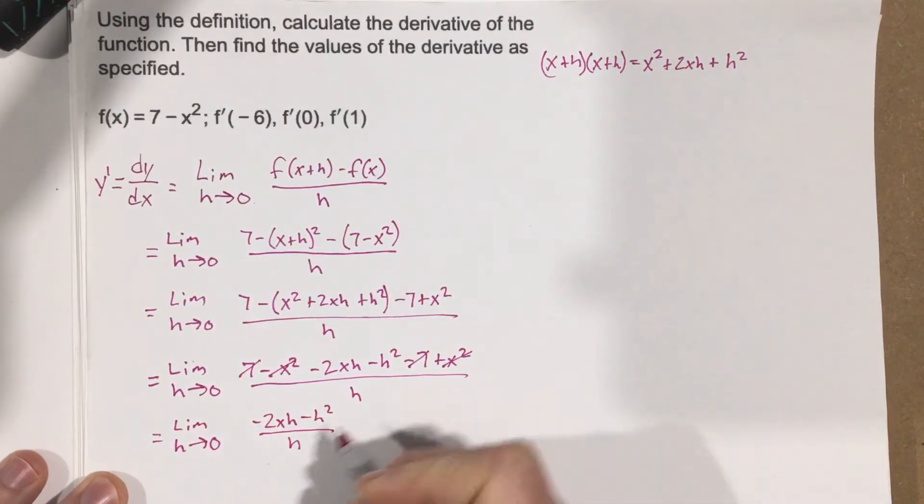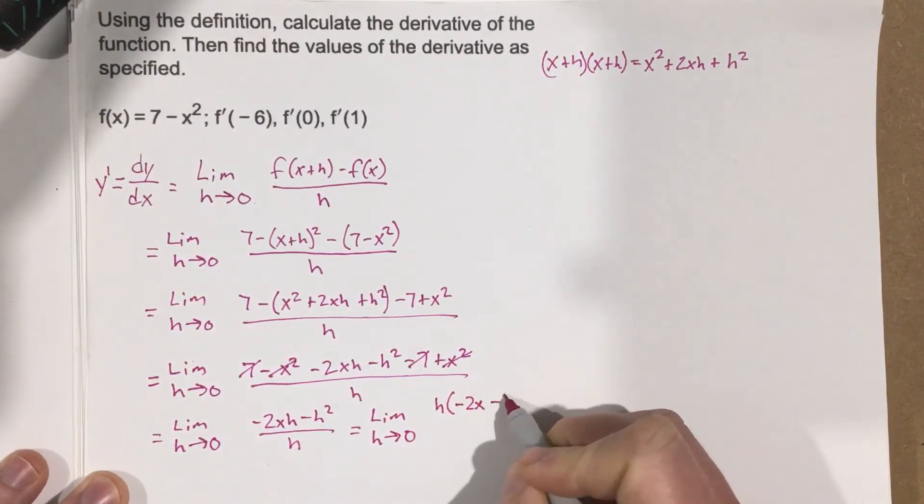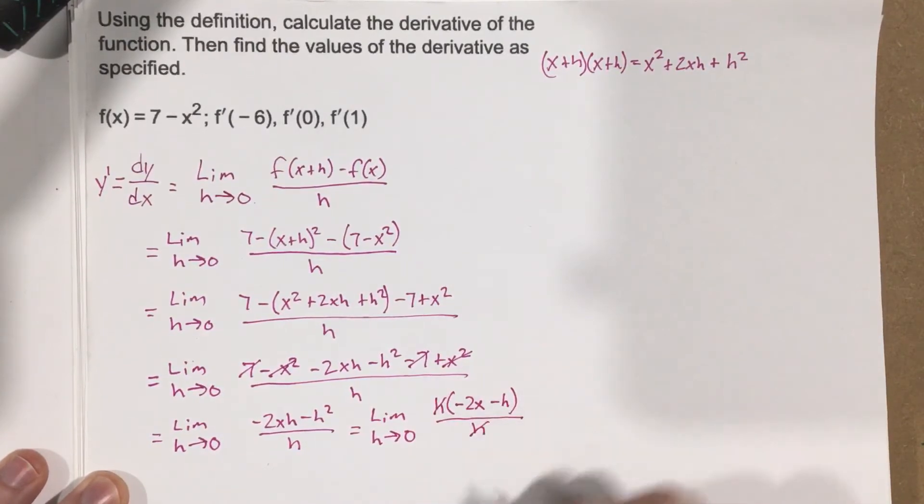Now, we're going to factor out an h here. This is limit as h approaches 0 of h times negative 2x minus h in parentheses, over h. The h's cancel.